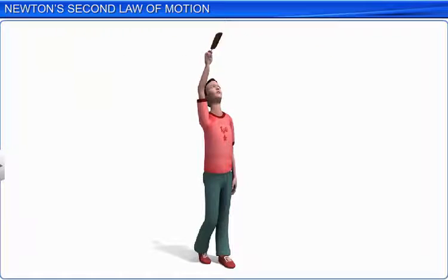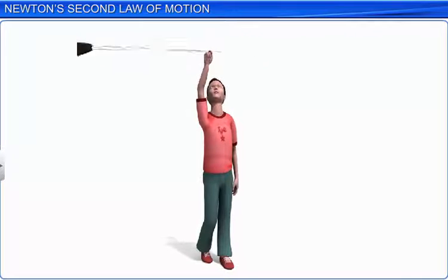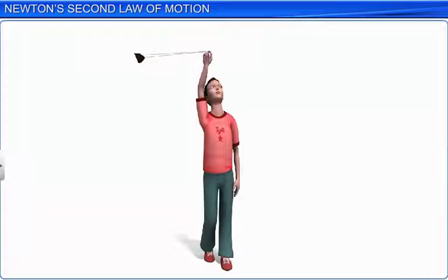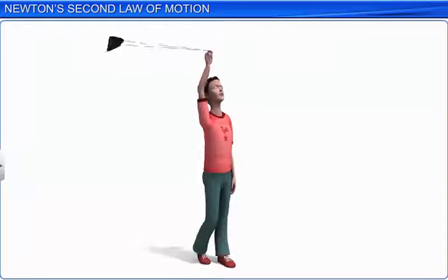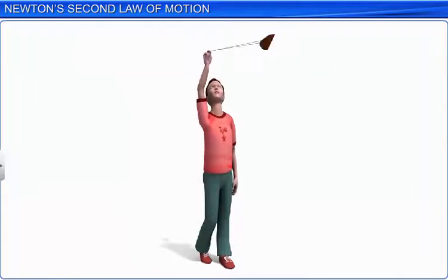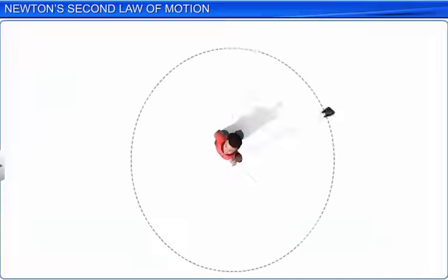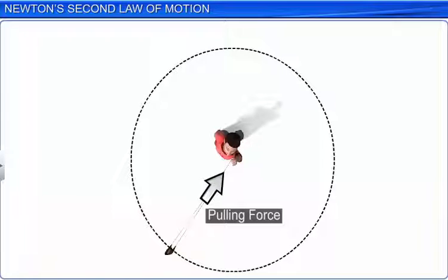Consider a sling being whirled such that the stone and the thread rotate in a horizontal plane with uniform angular velocity. The magnitude of the linear velocity of the stone remains constant but its direction changes continuously. To sustain this kind of motion, we have to continuously apply a pulling force on the thread.